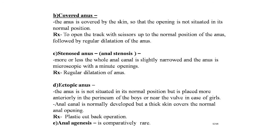The next low anomaly is stenosed anus, or anal stenosis. More or less the whole anal canal is slightly narrowed and the anus is microscopic with a minute opening. The patient usually presents a bit late as he or she can pass meconium. Treatment is regular dilatation of the anus.